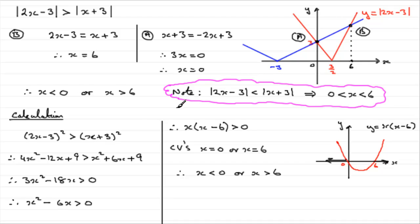If the inequality had been a less-than, we'd follow the same calculation steps, arrive at the same critical values, but look for where y is less than 0 — that's below the x-axis between 0 and 6. So the solution would be 0 less than x less than 6. I hope that gives you an idea of how to solve mod inequalities with a function of x on both sides, whether by sketching or calculation.